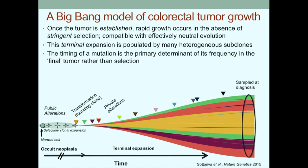We proposed an alternate model that could potentially explain these data and sought to test its predictions. In this scenario, we again have accrual of somatic alterations leading up to transformation, and after transformation we continuously accrue private alterations. But in this model, the timing of an alteration is the fundamental determinant of its frequency in the final tumor - meaning mutations accrued at a sufficiently late point may not obtain detectable frequencies in current sequencing data. The timing of a mutation is the fundamental arbitrator of its frequency rather than subclonal selection.